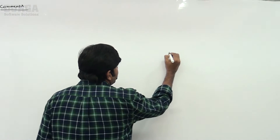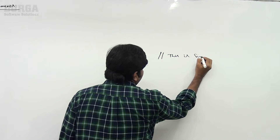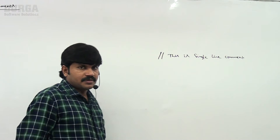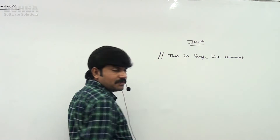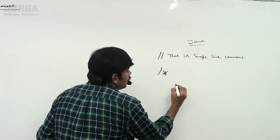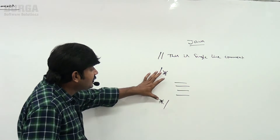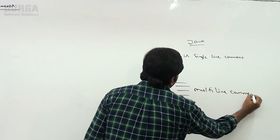Now I will explain comments — how you can declare comments in Python. If you go for other languages like Java, a single line comment looks like this, and a multi-line comment uses slash-star syntax with first line, second line, third line.